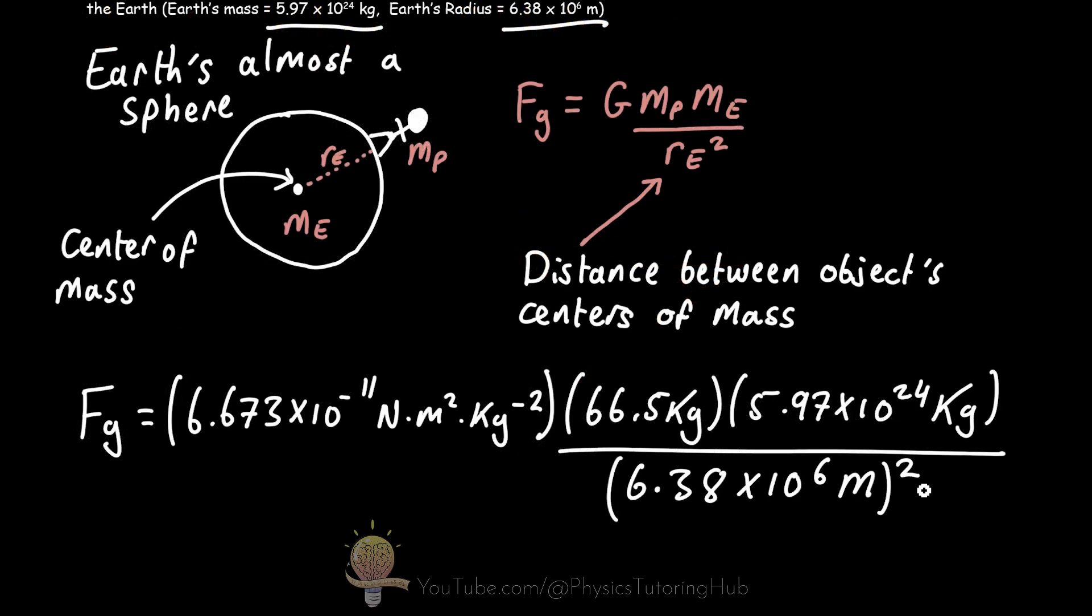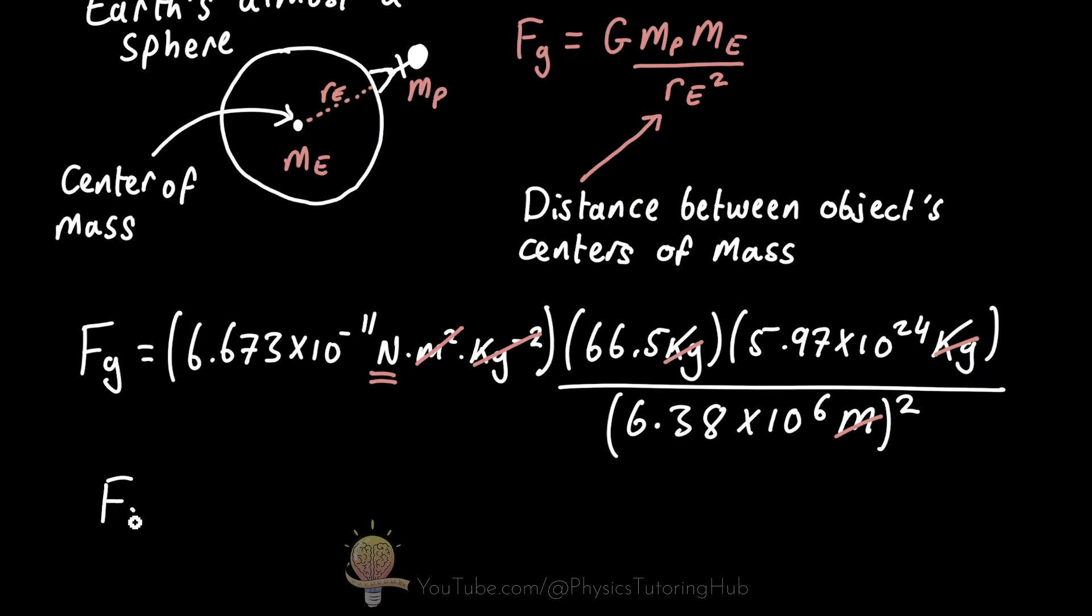And all we need to do now is plug in our values. So the gravitational force experienced by a person is 651 newtons.